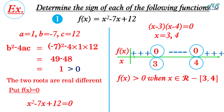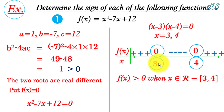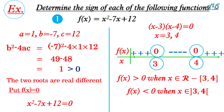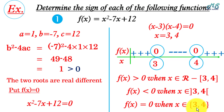So f(x) > 0 when x ∈ ℝ minus the closed interval [3, 4], because at x = 3 and x = 4 the function equals zero. f(x) < 0 when x ∈ (3, 4) — the open interval. And f(x) = 0 when x ∈ {3, 4}, meaning f(x) = 0 at x = 3 or x = 4.